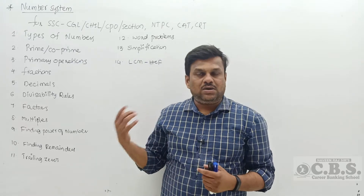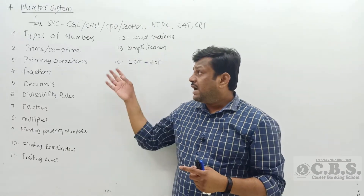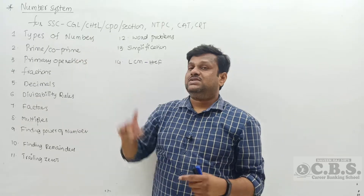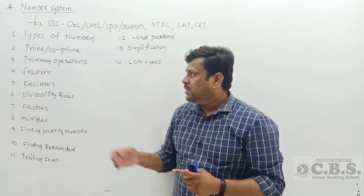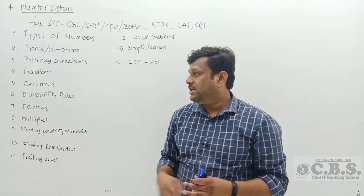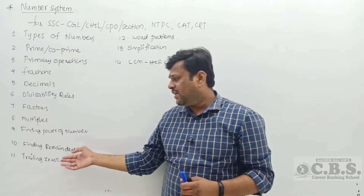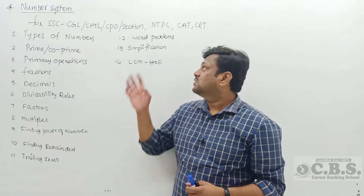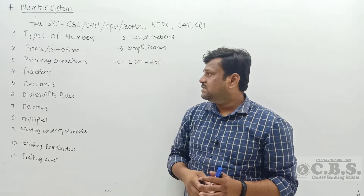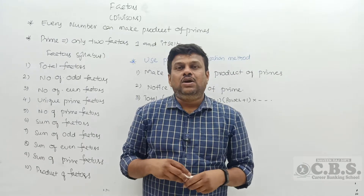The number system subtopics are very important to score well in exams. The subtopics start with: types of numbers, prime and co-prime rules — very important, used in simplification across all chapters — primary operations, fractions, decimals, divisibility rules, factors, multiples, finding power of a number, finding remainders, trailing zeros, word problems, simplification, LCM, and HCF.